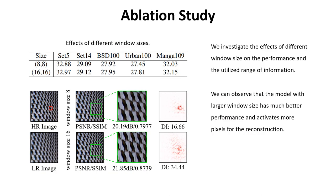In the following part, we provide ablation studies to show the effectiveness of the key designs in our method. First, we show the effects of different window sizes of window self-attention. Intuitively, enlarging the window size can directly activate more pixels for reconstruction. From the results, we observe that the model with a larger window size indeed has much better performance and uses more pixels. Thus, we choose a larger window size of 16 as default in our method.